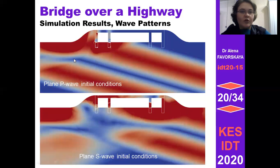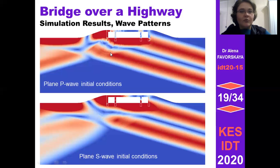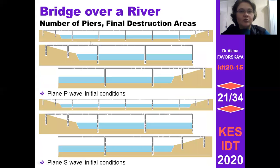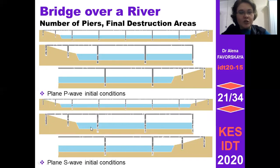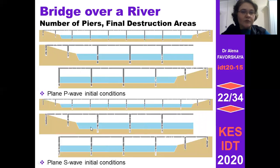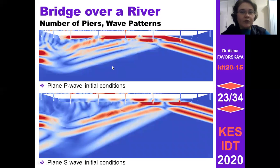Let's move on to bridges over a river, where we vary the number of pairs of piers. There are some differences in destruction areas in the case of P-waves, but the same pattern of destruction in the case of shear waves. This can also be explained using wave logic methods by analyzing wave patterns.